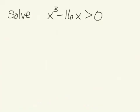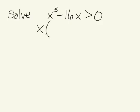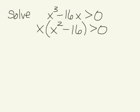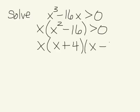When we want to solve this inequality, the first thing you notice on the left-hand side is that both of these terms have a factor of x built in. So we factor x out and what we have left is x(x² - 16) > 0. The next thing you should see is that x² - 16 can be factored again using the difference of two squares — the first term is a perfect square, the last term is a perfect square, and there's a subtraction sign in between. So the factored form is x(x + 4)(x - 4) > 0.